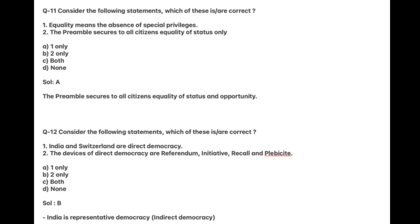Consider the following statements. Which of these are correct? India and Switzerland are direct democracies. The devices of direct democracy are referendum, initiative, recall and plebiscite. Answer is B. India is a representative democracy, not a direct democracy. Switzerland is an example of direct democracy.